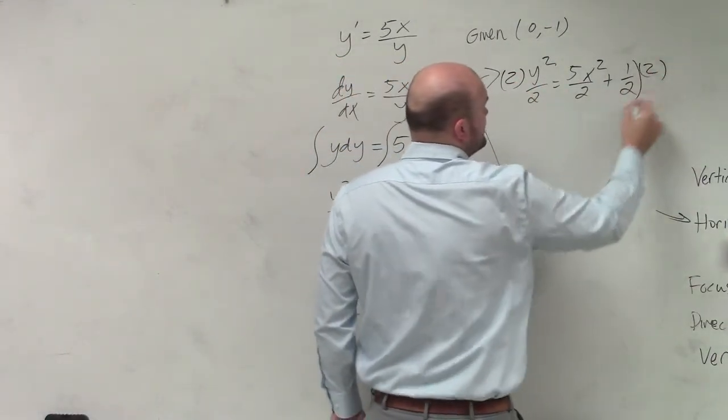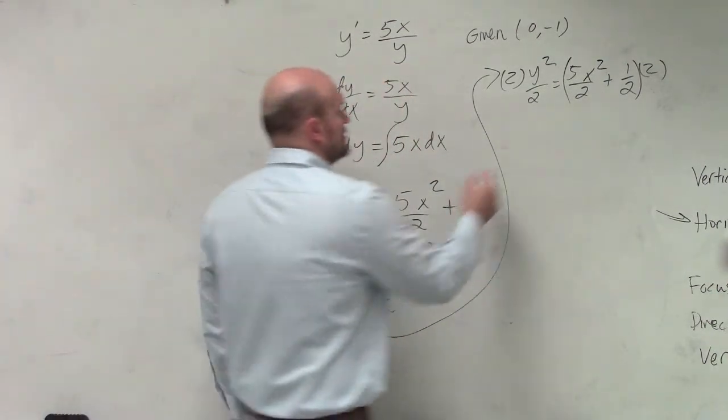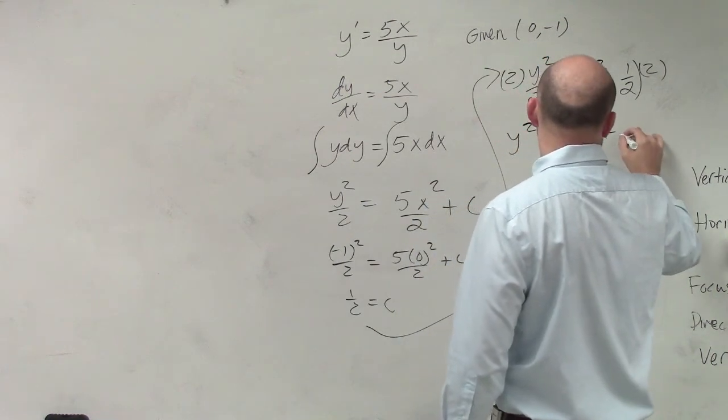So I'll multiply by 2. Just make sure you multiply that 2 by both of them. So make sure you use your parentheses. So I have y squared equals 5x squared plus 1.